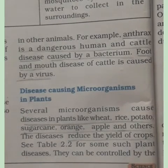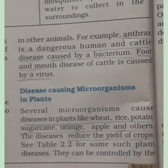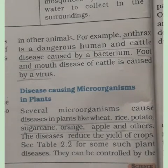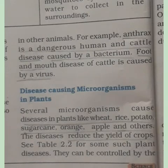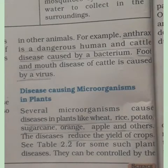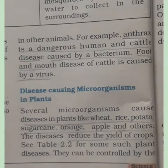Microorganisms not only cause diseases in humans but also in animals and plants. Anthrax is a dangerous disease in humans and cattle caused by a bacterium. Foot and mouth disease of cattle is caused by a virus. Several microorganisms cause diseases in plants such as wheat, rice, potato, sugarcane, and orange, causing decay, death, spots on leaves, and spoiling of fruits and vegetables.